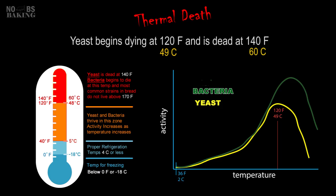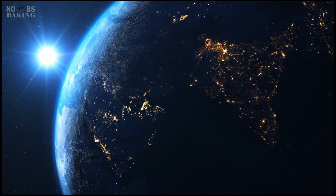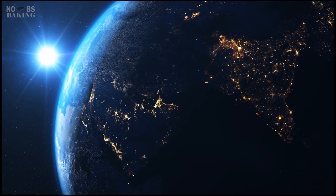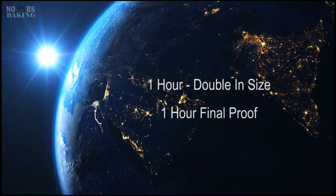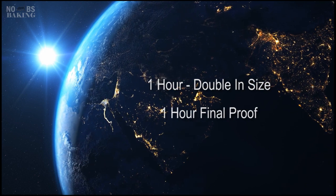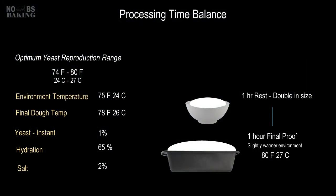Final proofing temperatures can be increased up to a max of about 85°F. In a perfect world, most bakers try to get their yeast balanced for a one-hour double-in-size rest and around a one-hour proof time. So if room temperature is in a good range for yeast reproduction, our final dough temperature is correct, and our salt is at standard levels, this process and timing generally works pretty well for most standard breads.